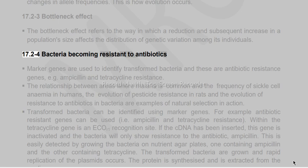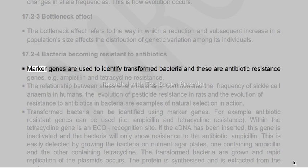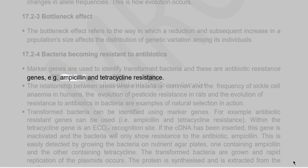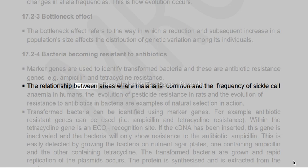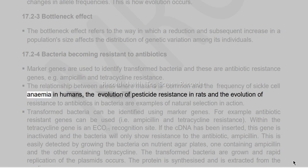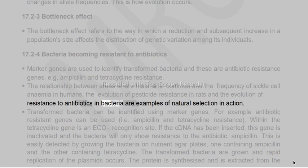Marker genes are used to identify transformed bacteria, and these are antibiotic resistance genes, e.g. ampicillin and tetracycline resistance. The relationship between areas where malaria is common and the frequency of sickle cell anaemia in humans, the evolution of pesticide resistance in rats, and the evolution of resistance to antibiotics in bacteria are examples of natural selection in action.